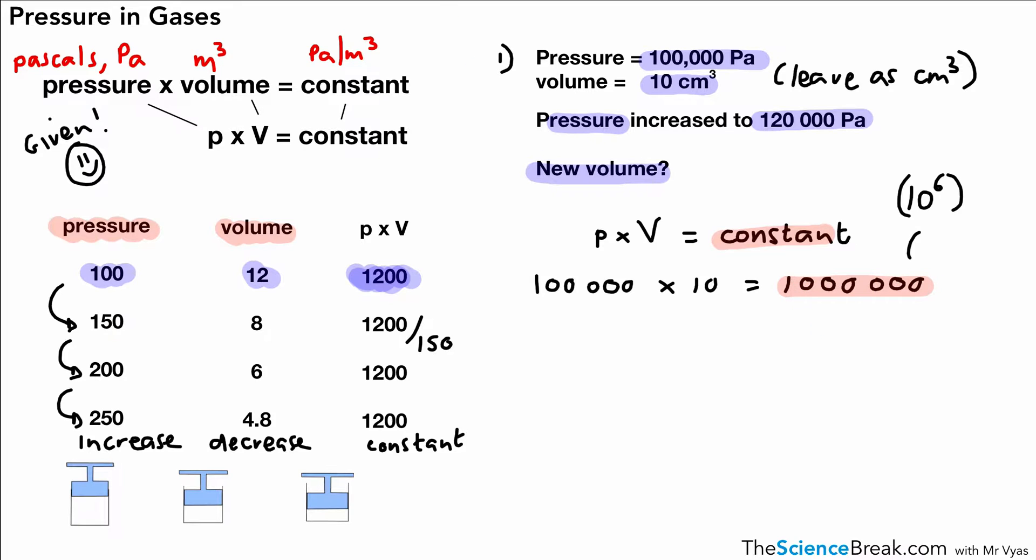If we change the pressure to 120,000 pascals, what's the new volume needed to maintain that constant? 120,000 times V equals one million. Rearranging: V equals one million divided by 120,000, which gives us 8.3 recurring centimeters cubed. We've increased the pressure, which decreases the volume as expected. The original volume was 10, and with increased pressure we get a lower volume.